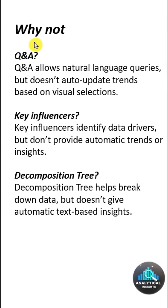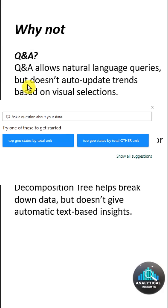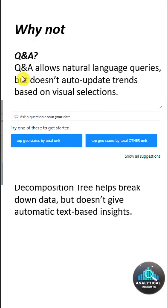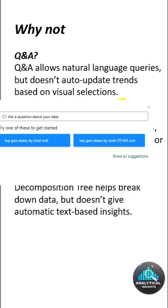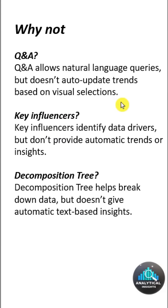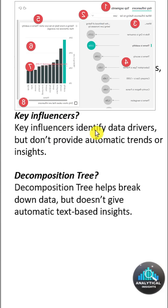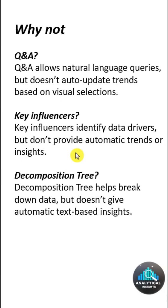You might wonder: why not the Q&A feature? Because Q&A allows natural language queries but does not auto-update trends based on visual selections. Why not Key Influences? Because Key Influences identify data drivers but do not provide automatic trends or insights.